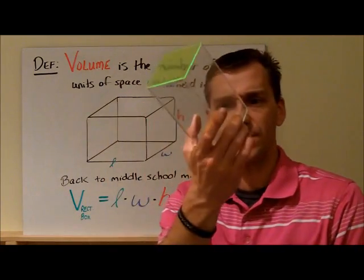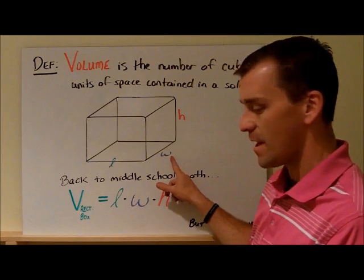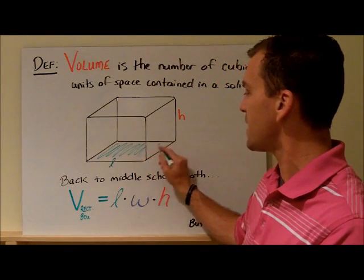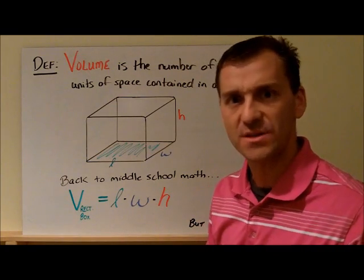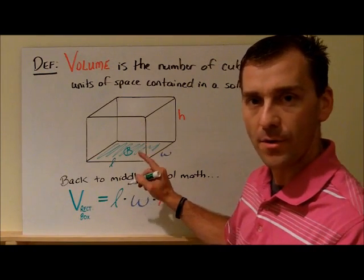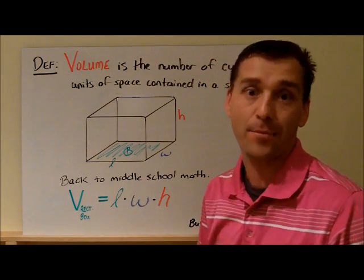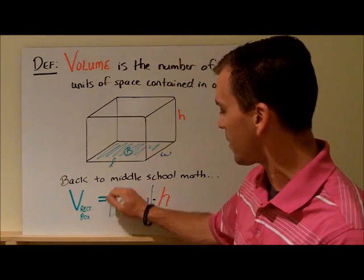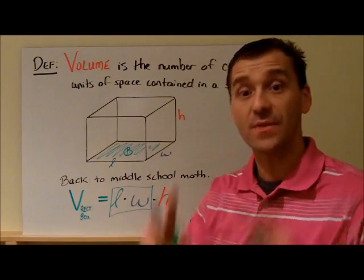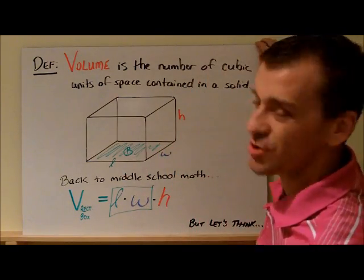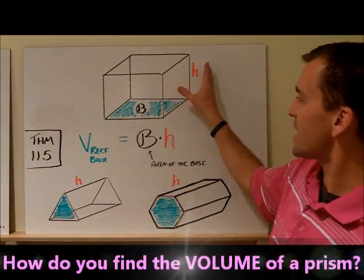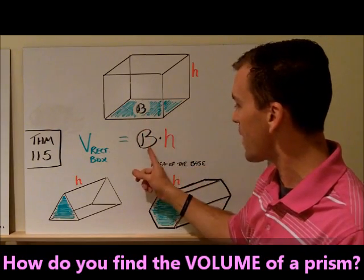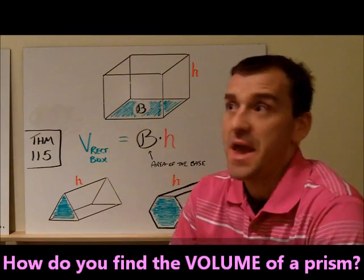Length times width is nothing more than the area of this base, because the base shape is just a rectangle. Length times width is the area of the base, denoted with a script capital B. I can replace length times width with just a script B representing the area of the base, then multiply by the height.